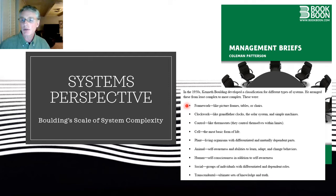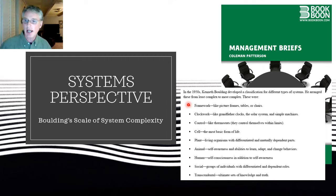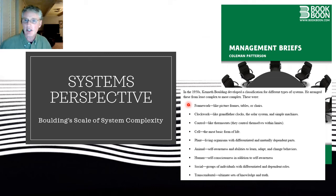Kenneth Boulding said the most elemental, most basic type of system — two or more interdependent elements that work together to accomplish a whole — he called framework systems. Think of picture frames, tables, chairs, blinds, plantation shutters, ceiling beams. A picture frame has the frame, the backing, maybe some glass — all these interdependent parts working together to accomplish a whole. But it doesn't move, it doesn't really do anything. It just stands there, and if it's not maintained, it might fall apart.